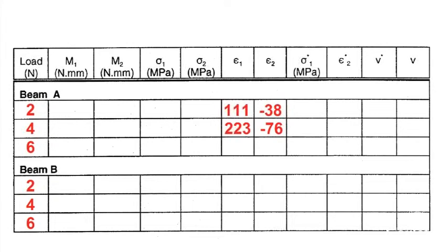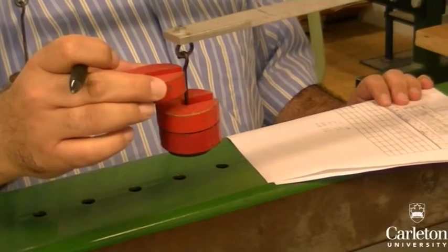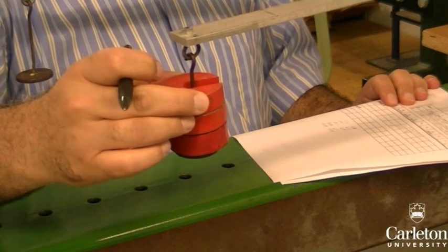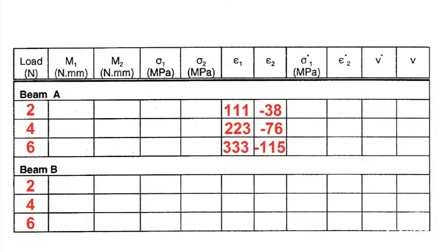Increase the load to four newtons and record the reading again, and once again for six newtons. Note that the magnitude of both strains has increased. Repeat this for the second brass beam.